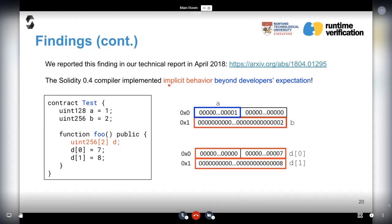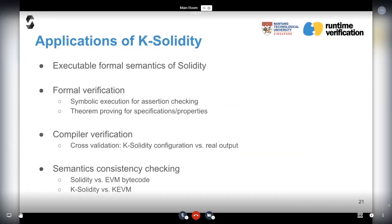We reported this finding in our technical report in 2018 on arXiv. After our investigation, we found that the Solidity 0.4 compiler implemented some implicit behavior, which is beyond developer's expectation. The compiler assumes the default value will be 0, so d points to slot 0 in the storage. That's why a becomes 0 and b becomes 8. This behavior has been fixed since Solidity 0.5. Now you need to specify the initial reference for d, otherwise the compiler will complain. From this example, we can observe that the formal semantics of Solidity is very important, especially for developers.